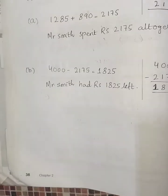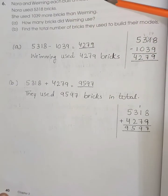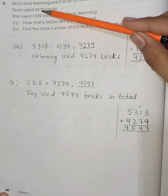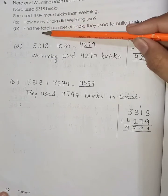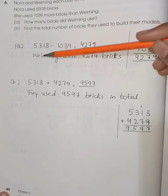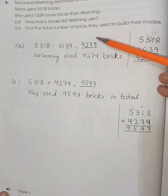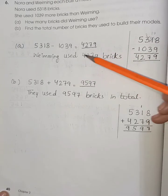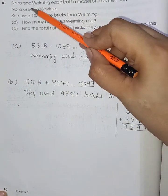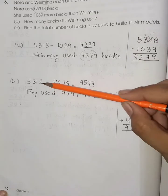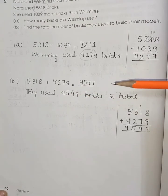Page number 40, word problem number 6: Nora and Wumen each built a model castle using building bricks. Nora used 5318 bricks. She used 1039 more bricks than Wumen. How many bricks did Wumen use, and what is the total number of bricks they used? Subtract: 5318 minus 1039 equals 4279 — Wumen used 4279 bricks. Now add Nora's and Wumen's bricks: 5318 plus 4279 equals 9597. They used 9597 bricks in total.